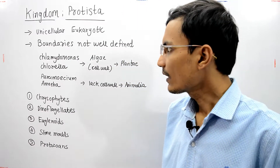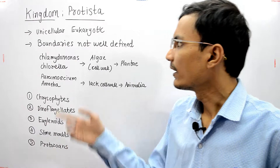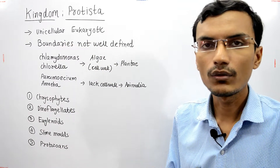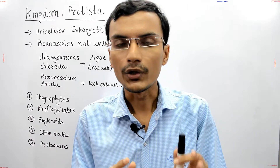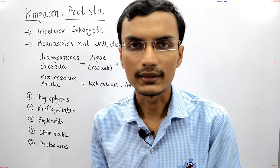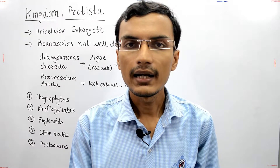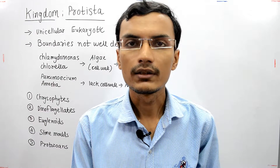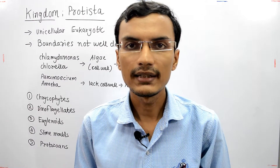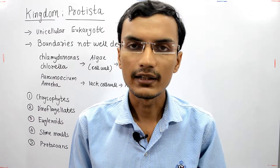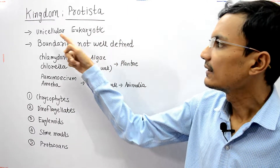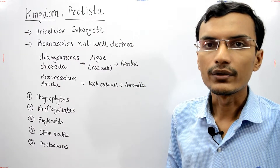Kingdom Protista contains unicellular eukaryotic organisms. All unicellular eukaryotic organisms are placed in Kingdom Protista. Kingdom Monera, on the other hand, contains prokaryotic organisms — those organisms which have prokaryotic cells are placed under Kingdom Monera. Protista contains unicellular eukaryotic organisms.